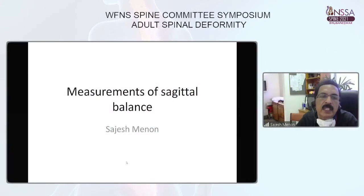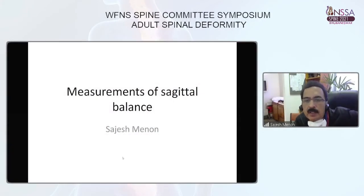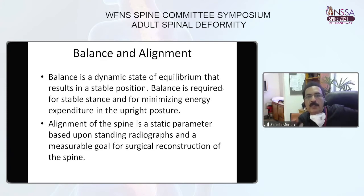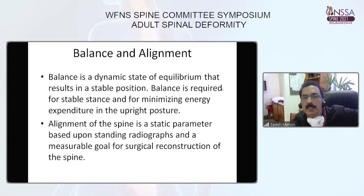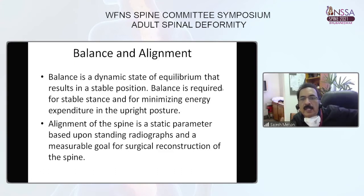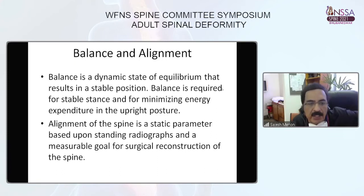We will see how we can measure the sagittal balance and which factors we have to take into account. One key thing to understand is that there is a difference between balance and alignment. Balance is a dynamic state of equilibrium that results in a stable position, required for stable stance and for minimizing energy expenditure in upright posture. On the other hand, alignment of the spine is a static parameter based upon the standing radiograph and a measurable goal for surgical reconstruction.